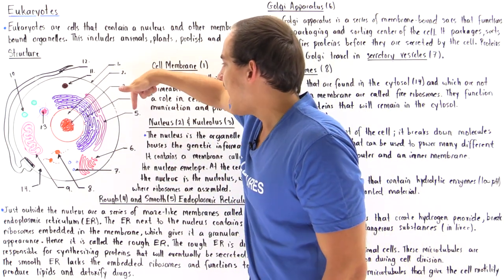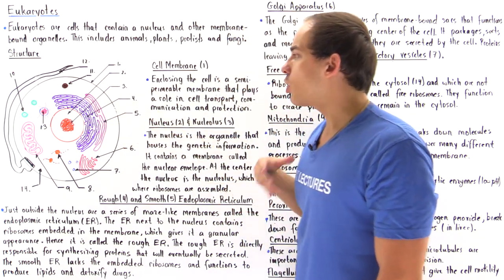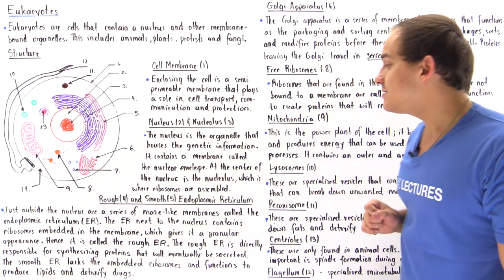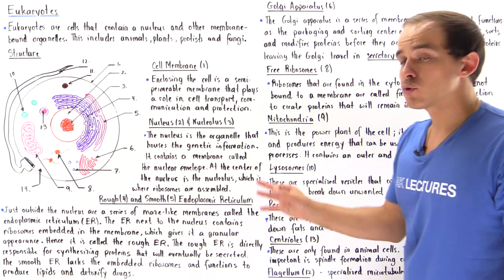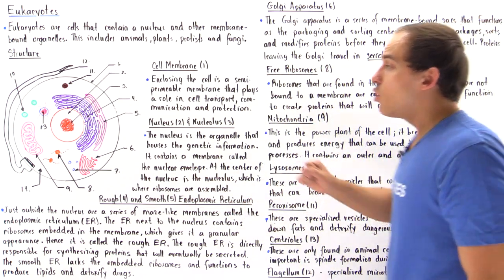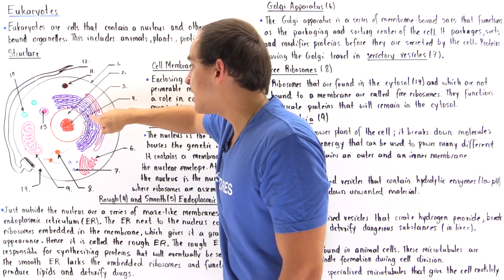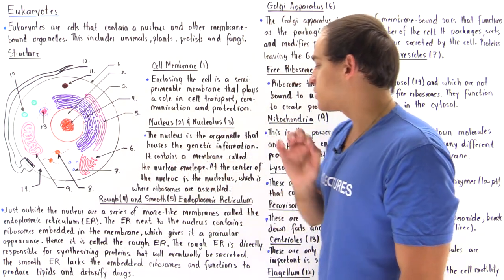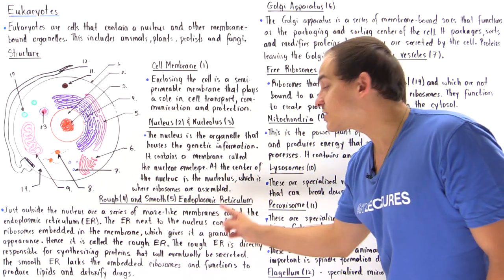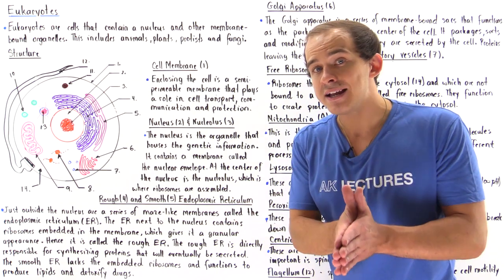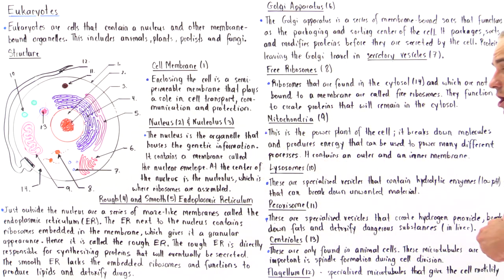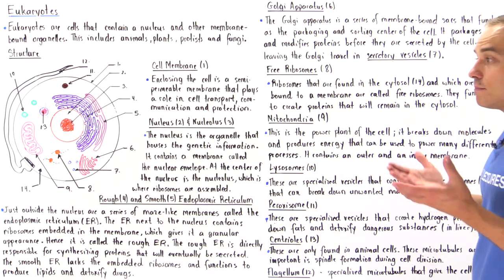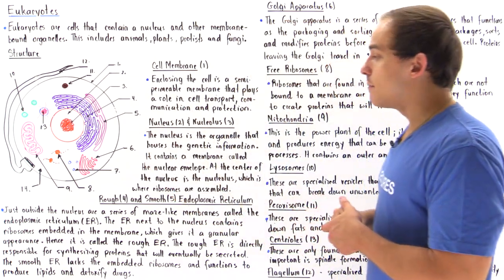Now let's move on to the endoplasmic reticulum. Just outside the nucleus are a series of maze-like membranes called the endoplasmic reticulum, or simply the ER. We have two types: the rough endoplasmic reticulum, which contains dots representing ribosomes, and the smooth endoplasmic reticulum, which lacks those dots. The rough ER contains ribosomes embedded in its membrane, giving it a granular appearance under the microscope — that's exactly why we call it the rough ER.